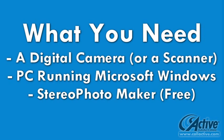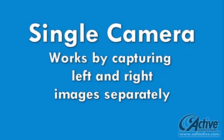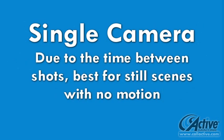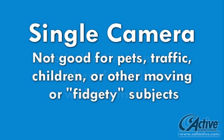Stereo Photo Maker is available for download at the link in the description. For this tip, we will use a single camera to take the right and left photos separately. Due to the time between the taking of the photos, this technique works best on scenes that are perfectly still, rather than shots with moving elements like pets, traffic, or windy wooded areas.